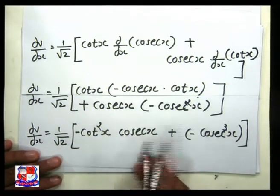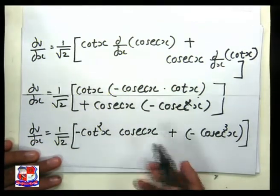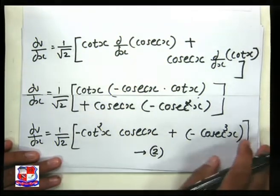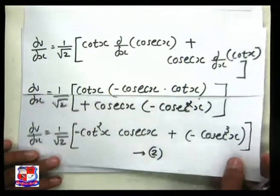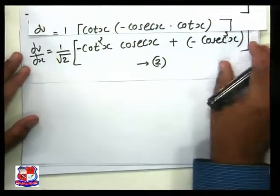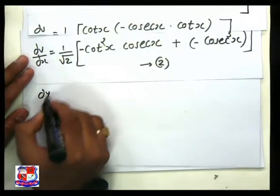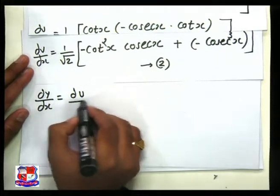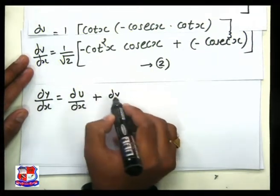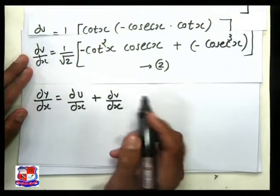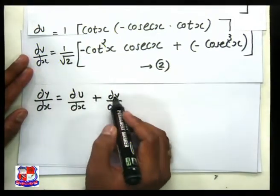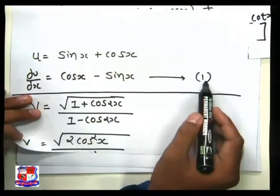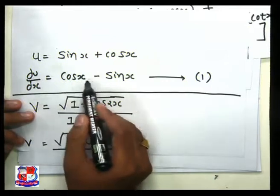We can further simplify by taking cosec x as a common factor — this is equation number 2. Ultimately, we want to find dy/dx. So we write dy/dx equal to du/dx plus dv/dx. This combines our two results: the result of du/dx from equation number 1 is minus cosec x.